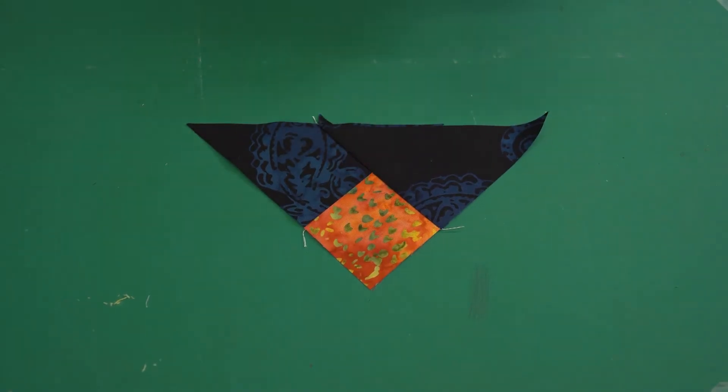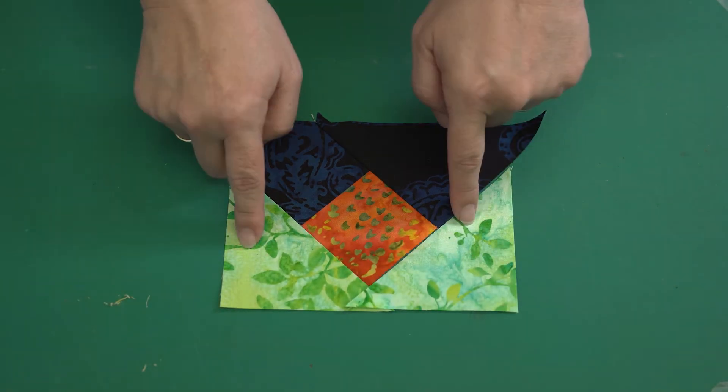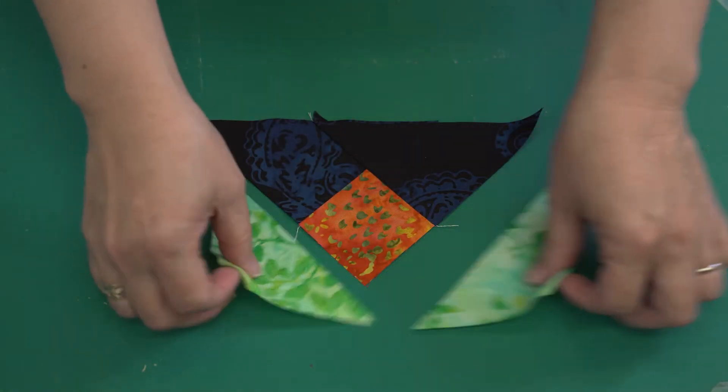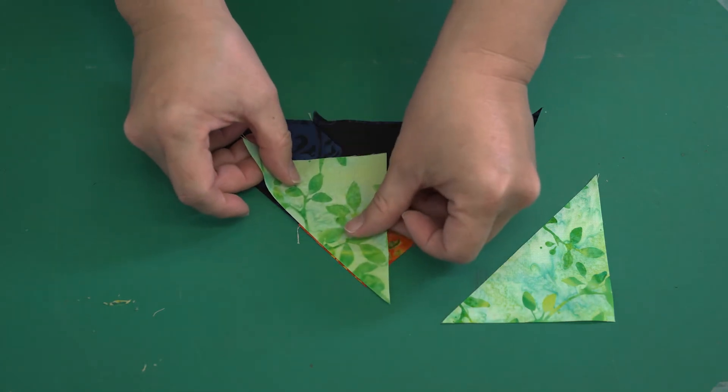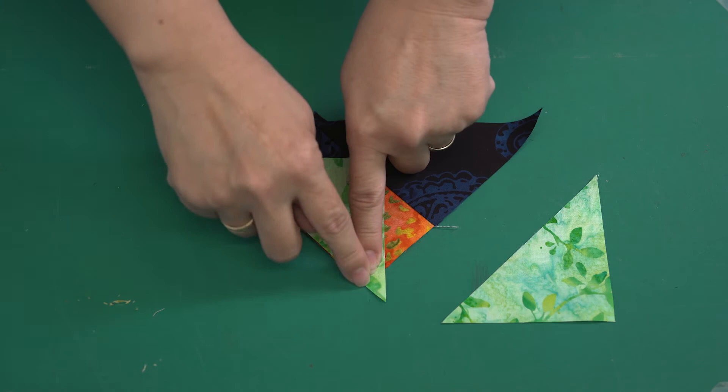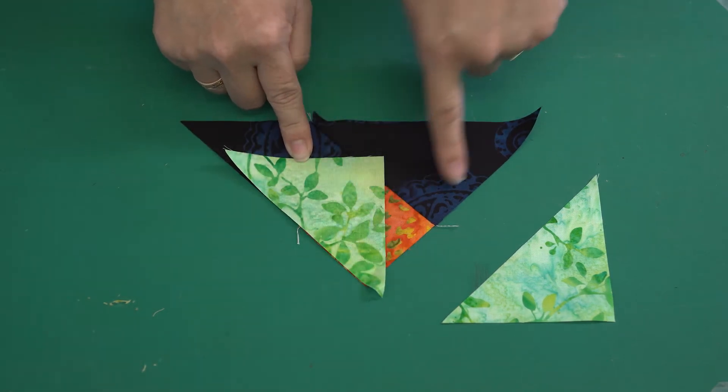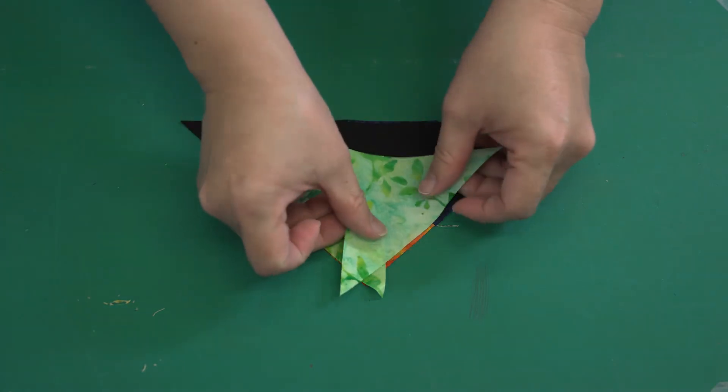On this triangle you are going to sew triangles to the top two sides to form a rectangle. When sewing you want to extend the tip of the triangle past the edge of your base triangle on both sides.